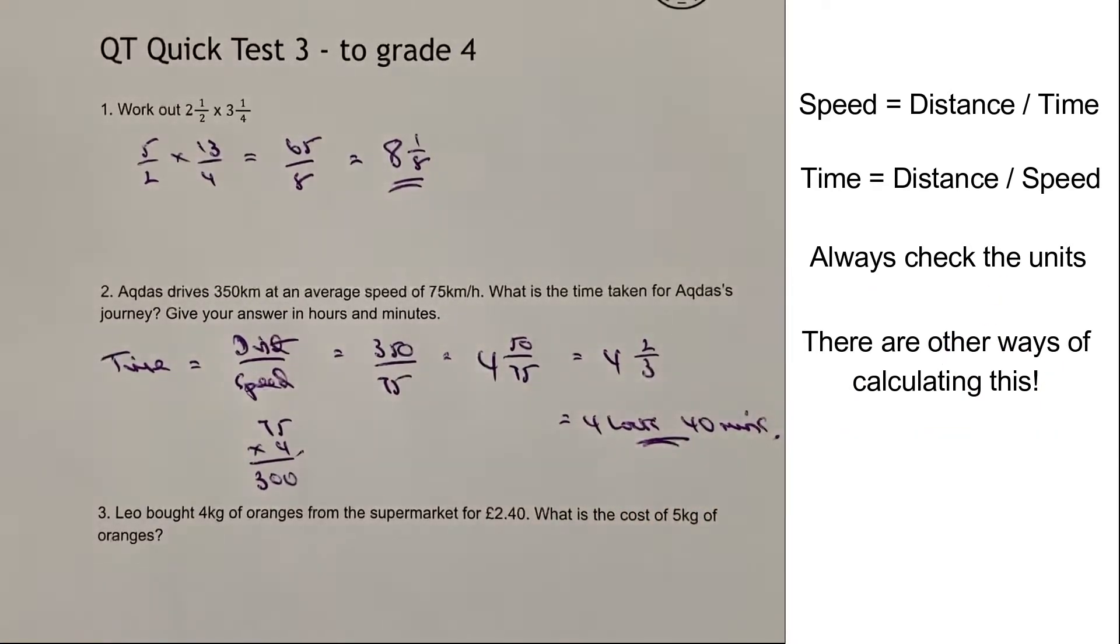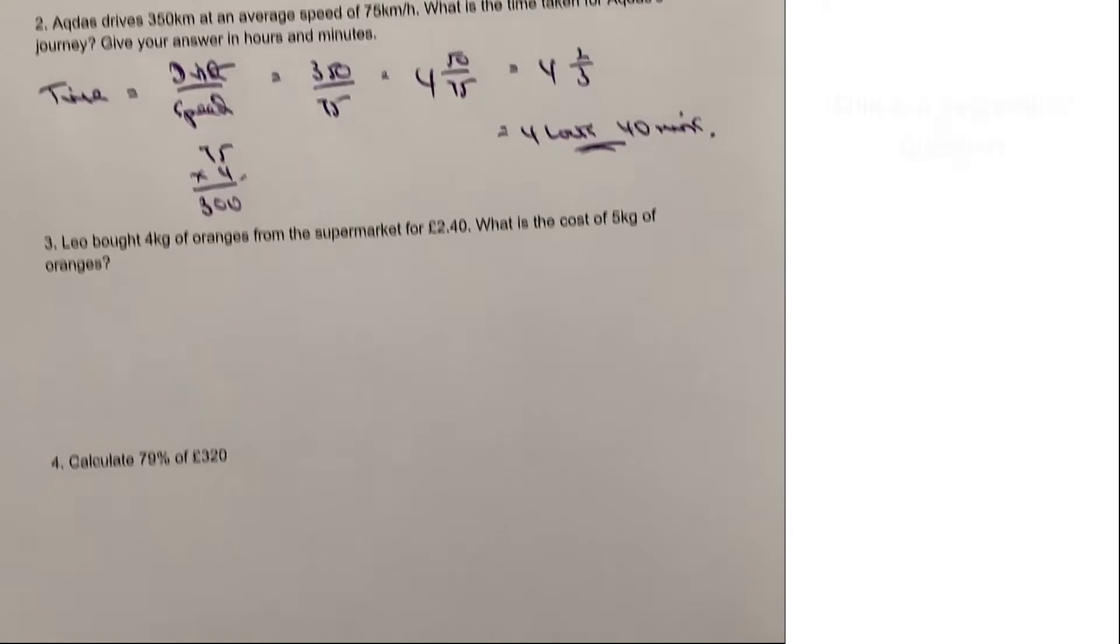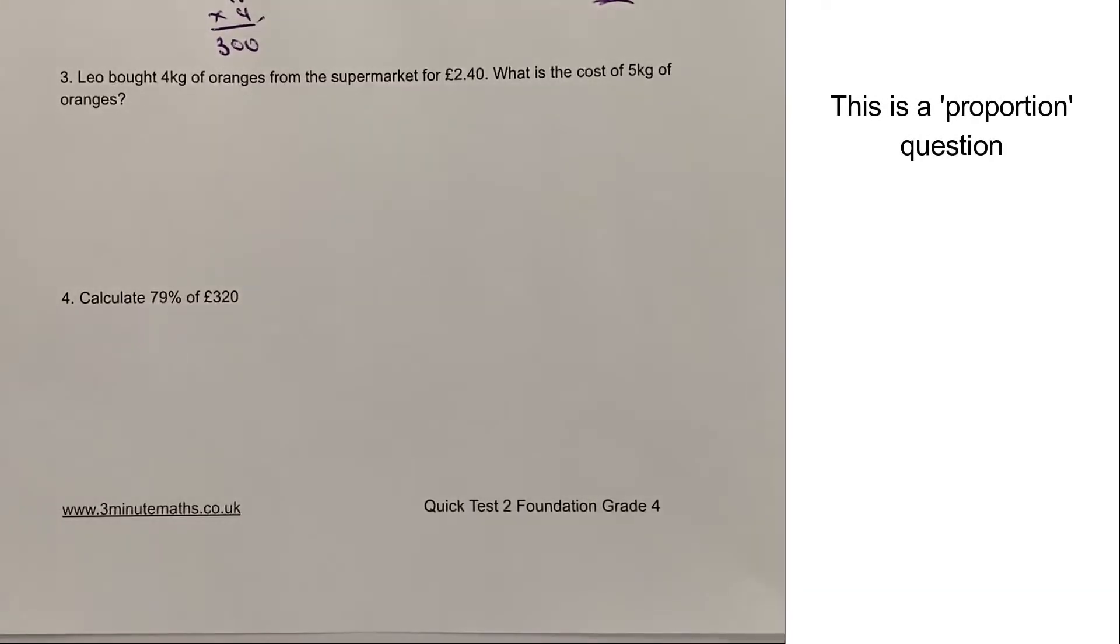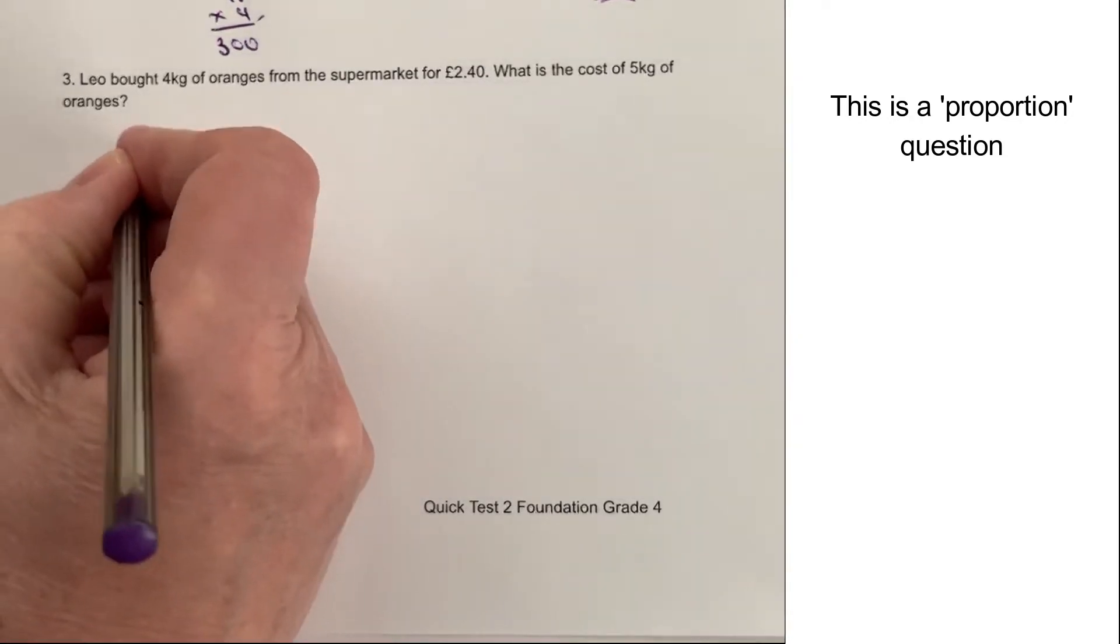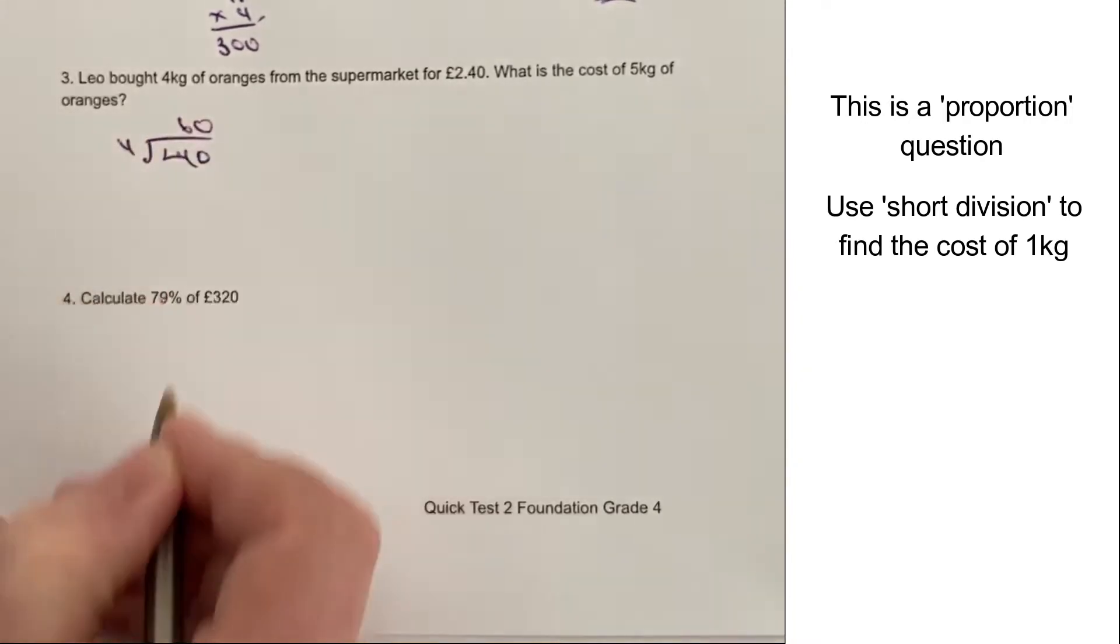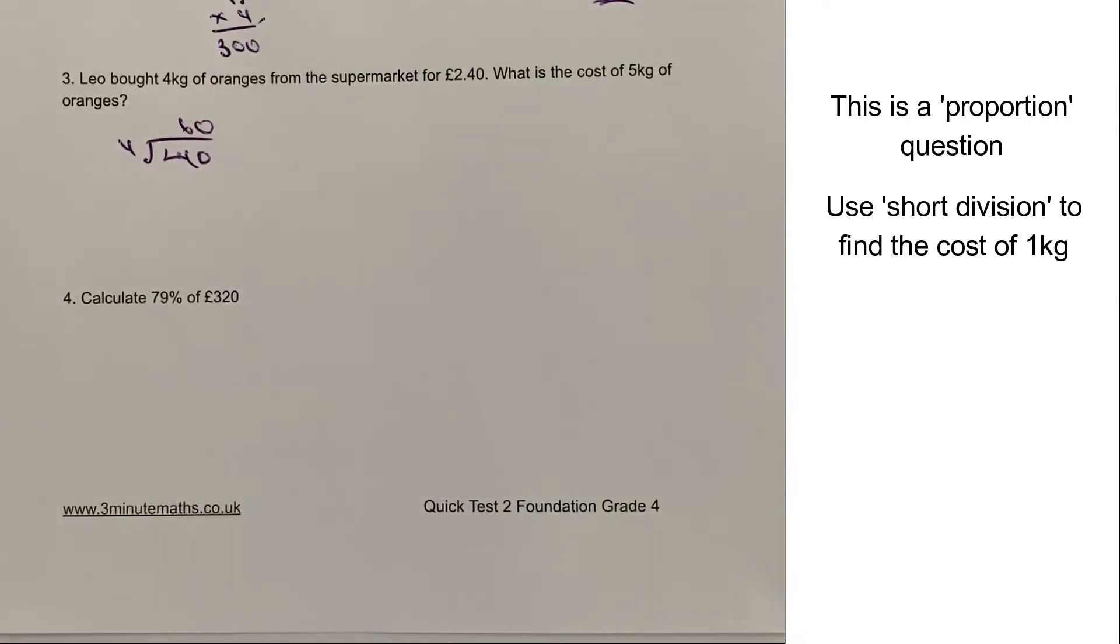Okay, and that would be the answer to that particular question. If you're not sure about that, please add a comment below. I'll always come back to you. Let's have a look at the final two questions on this side of the paper. We've got Leo bought four kilograms of oranges from a supermarket for £2.40. So when you see those sorts of questions, what we're really looking to do is to figure out the value of one kilogram, which is actually going to be 60p.